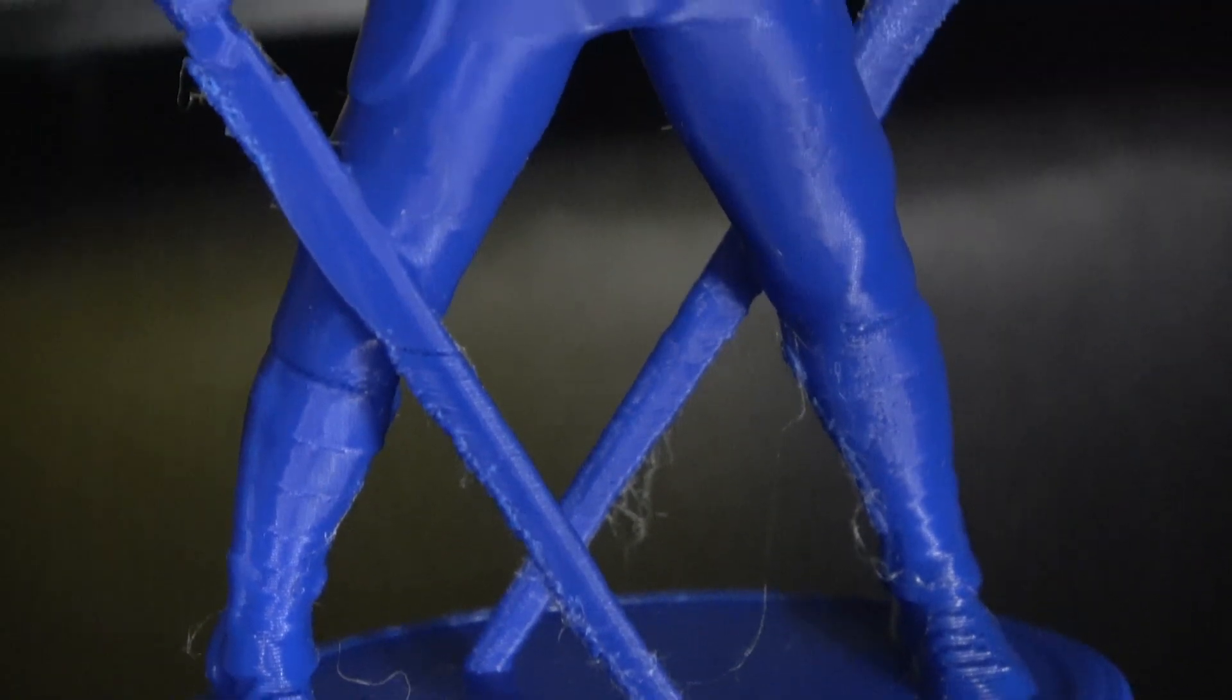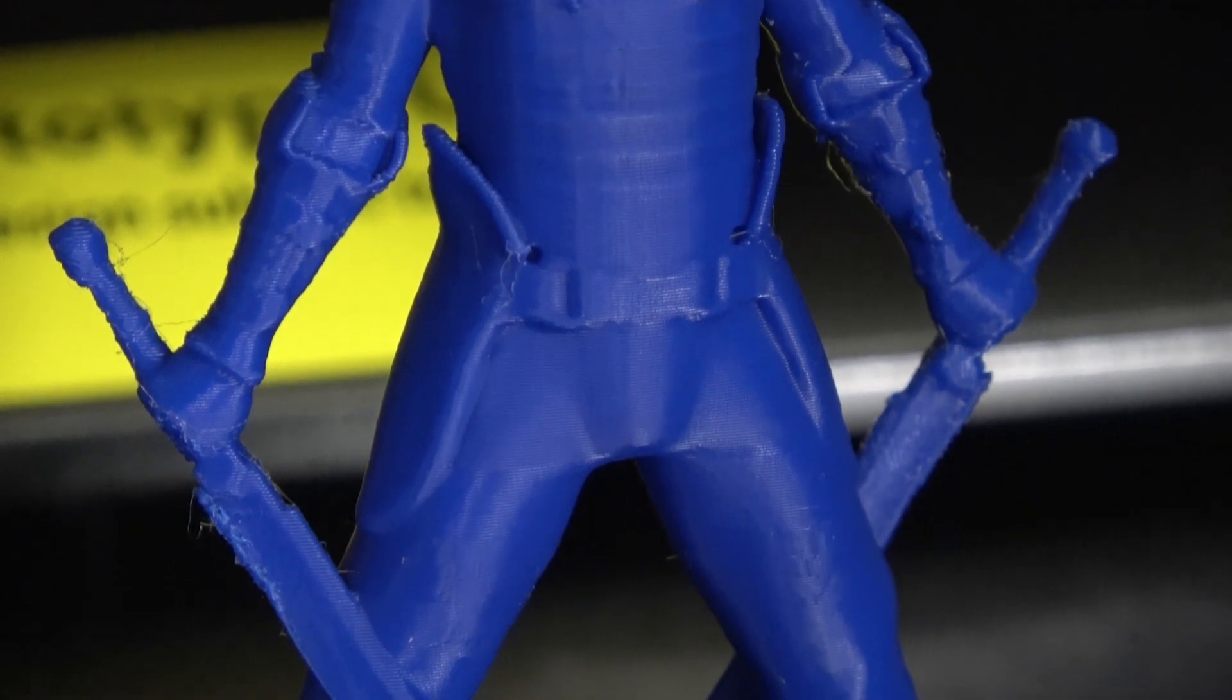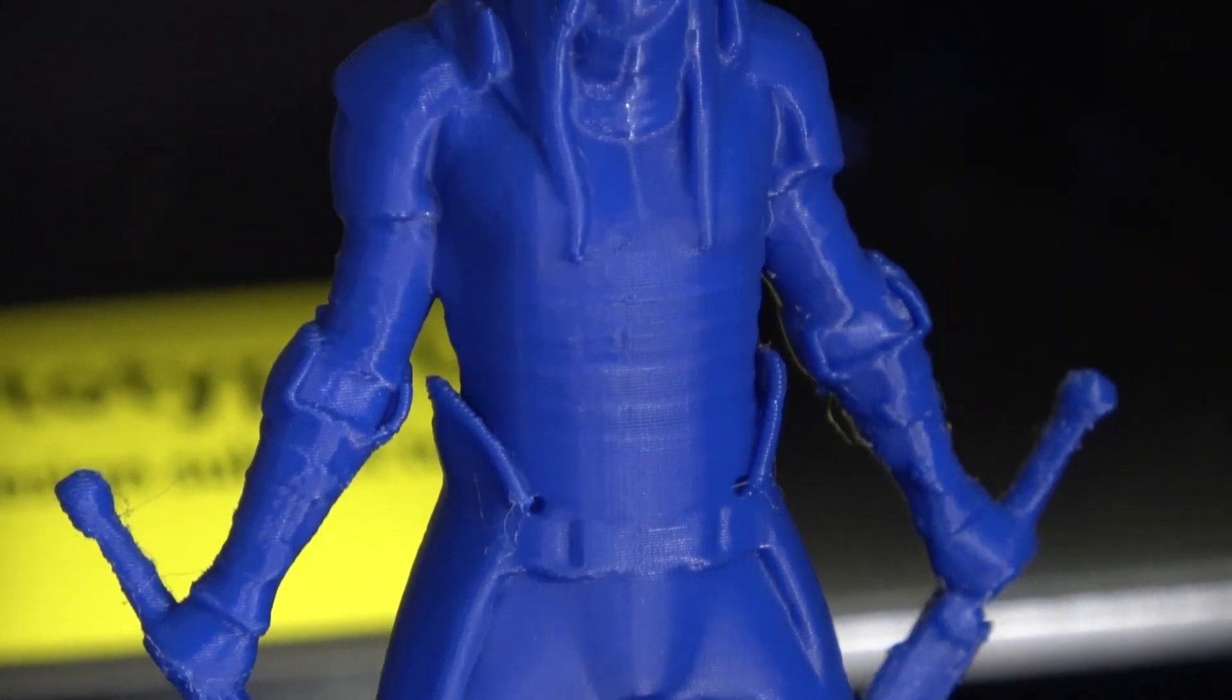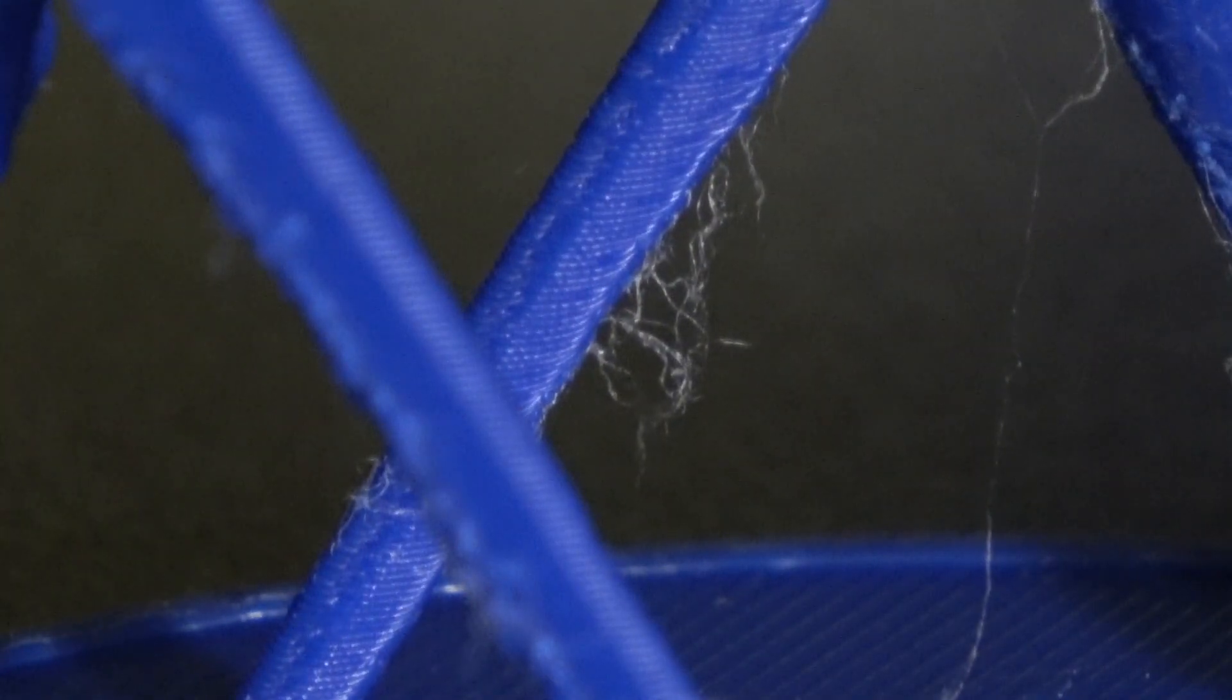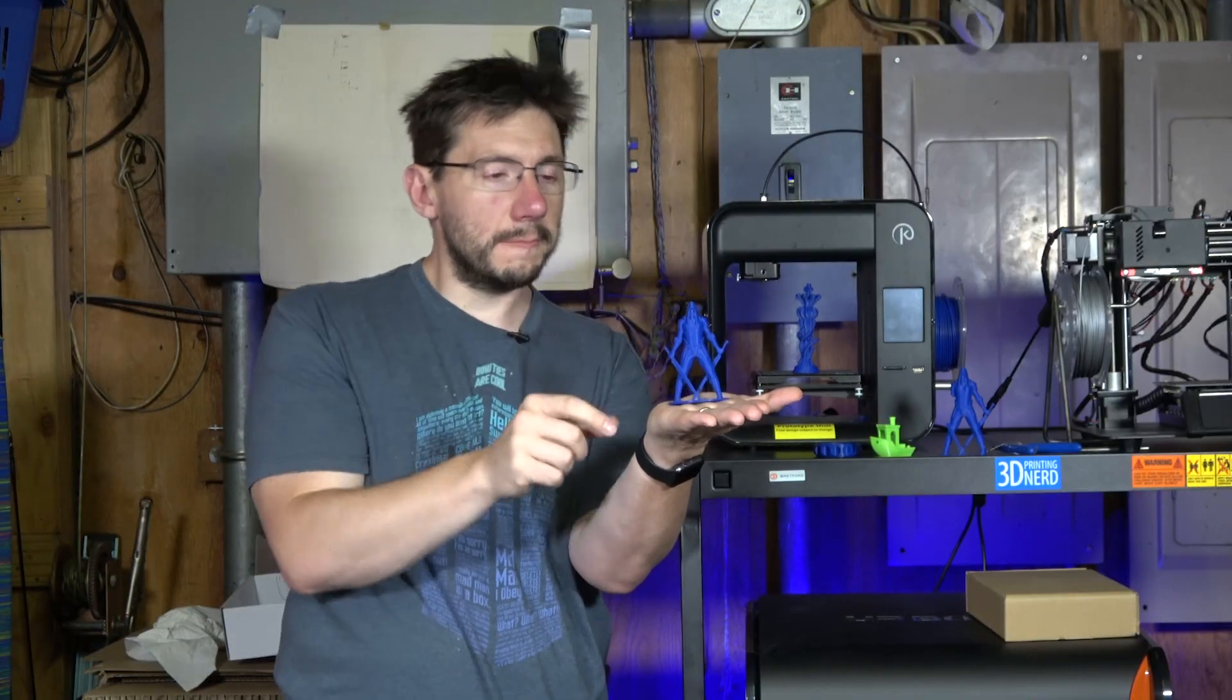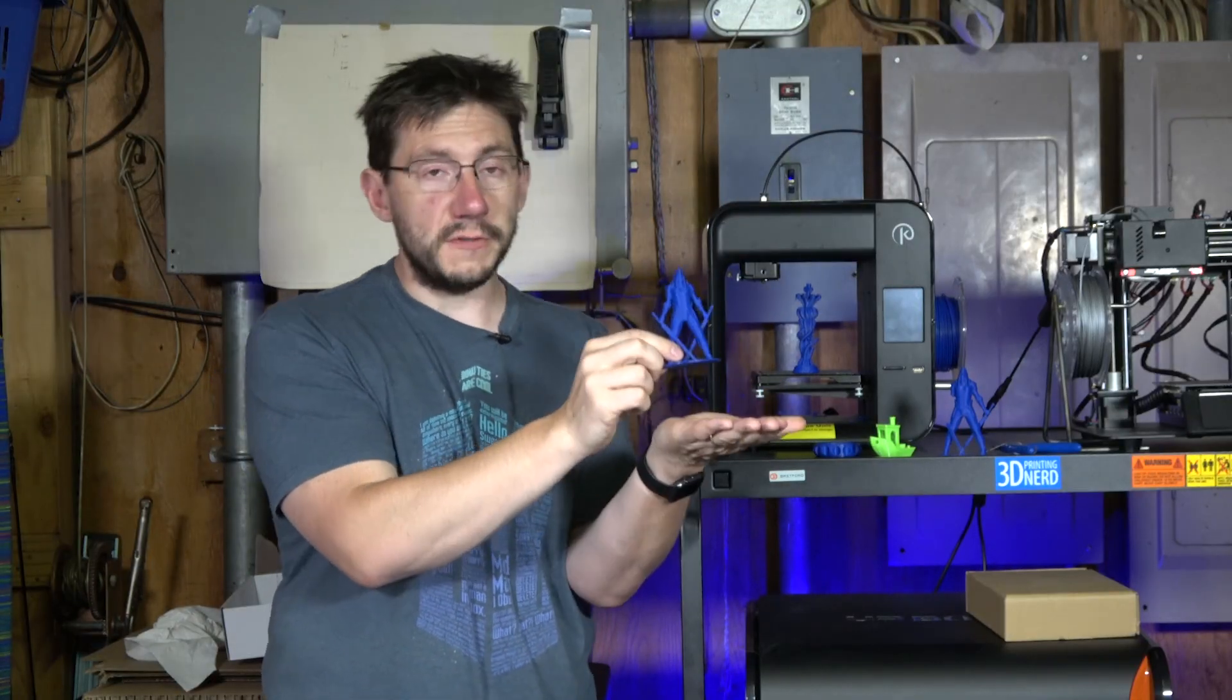I printed using Cura 2.5. This is on the Obsidian, so the temp of the filament was 215, no heated bed. It printed at 45 millimeters per second. Other than a little bit of wisps of filament not correctly dialed in, it looks pretty good. I'd say this is a quality model. The surface finish is fantastic.